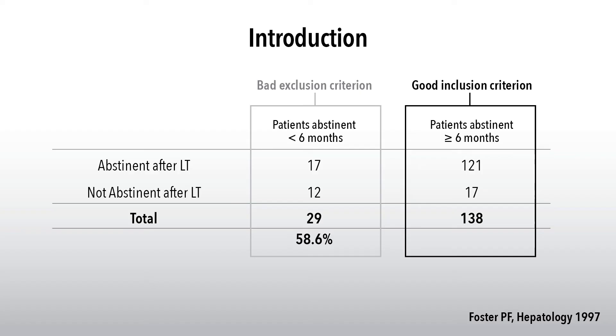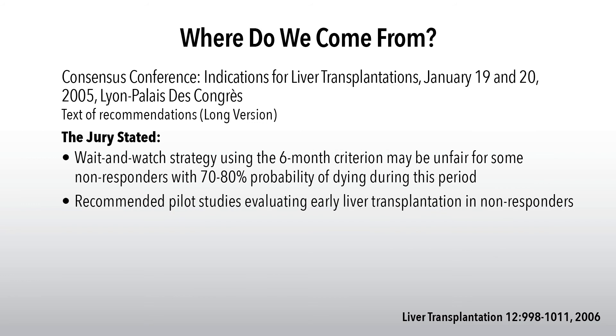Foster's 1997 publication in Hepatology showed that abstinence of less than six months produced significant recidivism, placing emphasis on the more-than-six-months criterion. A January 2005 consensus conference on indications for liver transplantation concluded that a 'wait and watch' strategy was needed, and that the six-month criterion may be unfair for non-responders. Pilot studies were recommended for evaluating this group for early transplantation in non-responders with severe acute alcoholic hepatitis.